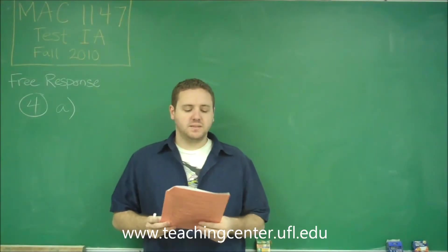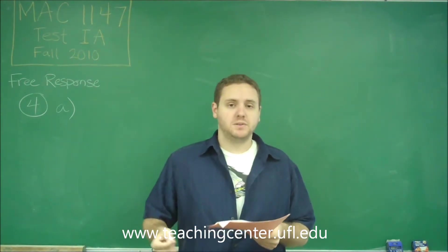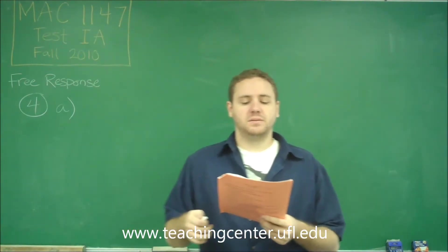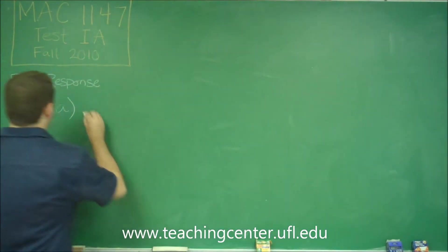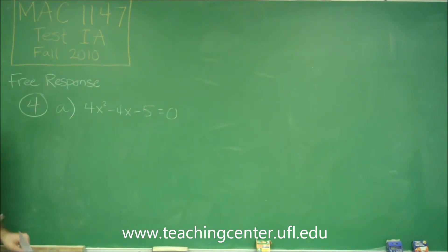At number 4, we're asked to solve a quadratic equation in two different ways, by completing the square and by using the quadratic formula. Let's use completing the square first. We have our function here, 4x² - 4x - 5 = 0, and we want to solve this by completing the square.